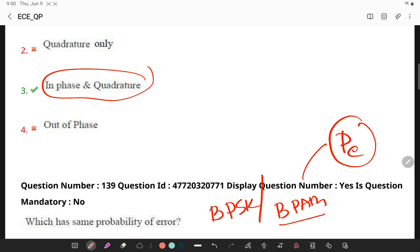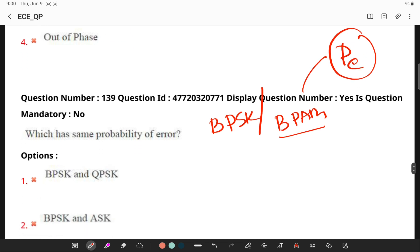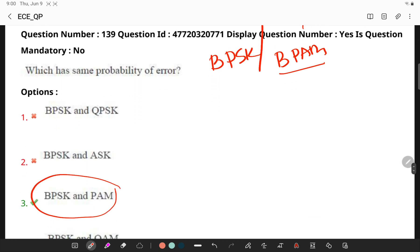However, in order to achieve the same bit error probability as BPSK and QPSK, which use twice the power, so BPSK and PAM will be having same probability of error. Remember, BPSK and QPSK, they will be using two times the power compared to this particular combination.